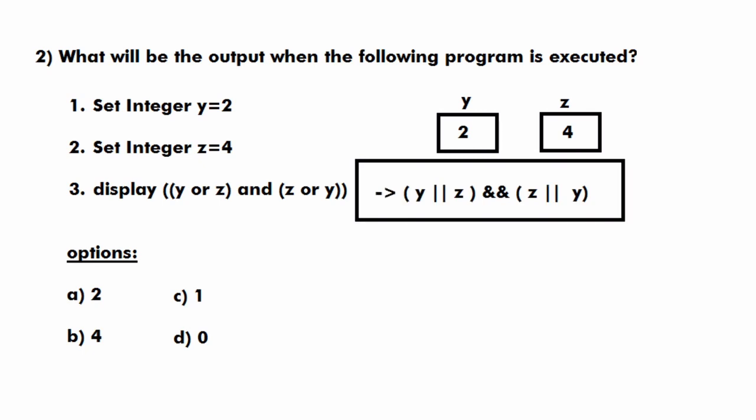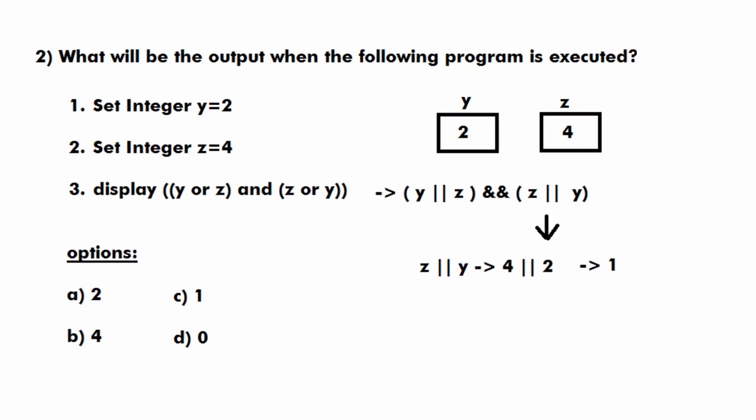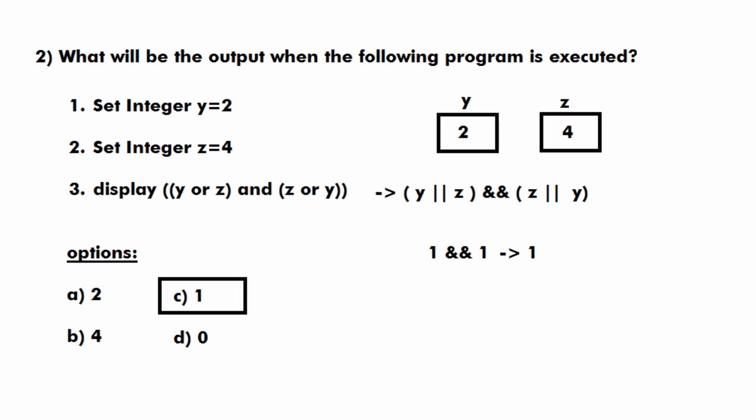The expression has two parts: first y OR z is solved, then z OR y, and finally the AND operation is applied. For y OR z, which is 2 OR 4, since both operands are non-zero the result is 1. Similarly z OR y gives 4 OR 2, which is also 1. Now the expression becomes 1 AND 1, and since both operands are 1, the AND operator returns 1. So the output is 1, which is option C.